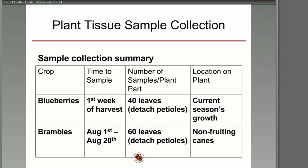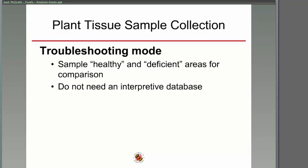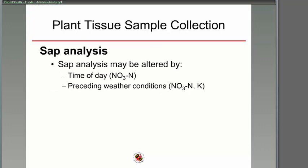For fruit crops, there are specific protocols: sample the first week of harvest, take 40 leaves with attached petioles from the current season's growth. It's different for every species. As with soil sampling, use random sampling, and you need samples from both the healthy and deficient areas. Plant samples are particularly valuable for troubleshooting because you can get a quicker, clearer answer comparing healthy and deficient tissue than you can from soil samples alone.